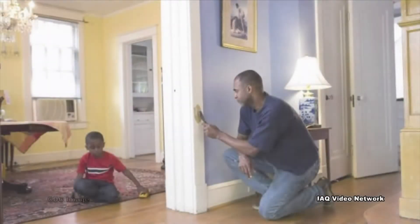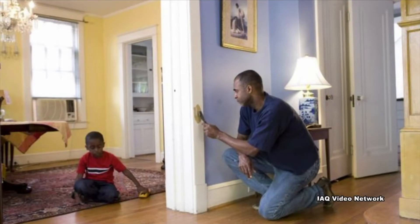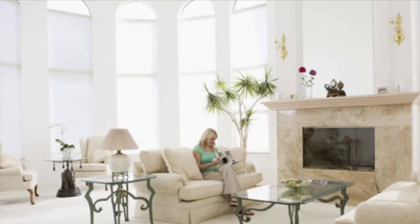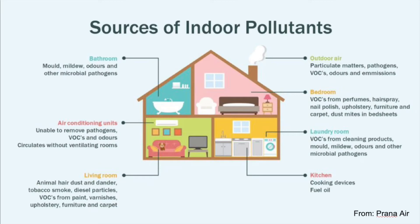From the bedroom, sources include perfumes, hair spray, nail polish, upholstery, furniture, carpet, dust mites, and bed sheets. From the laundry room, it's cleaning products, mold, mildew, odors, and other microbial pathogens. In the kitchen, it's cooking devices, fuel, and oil.